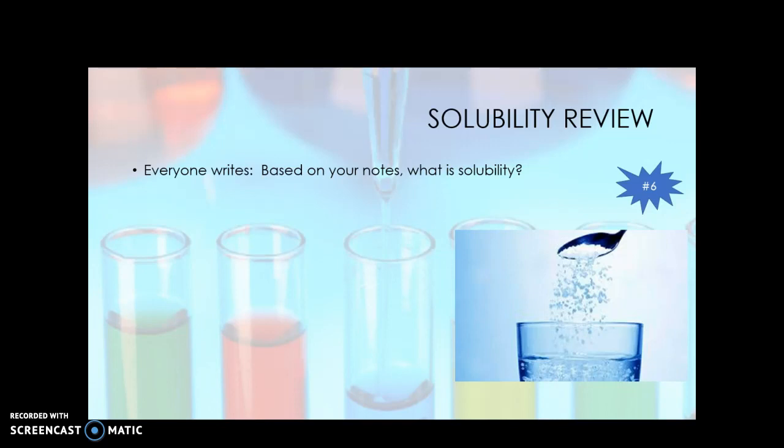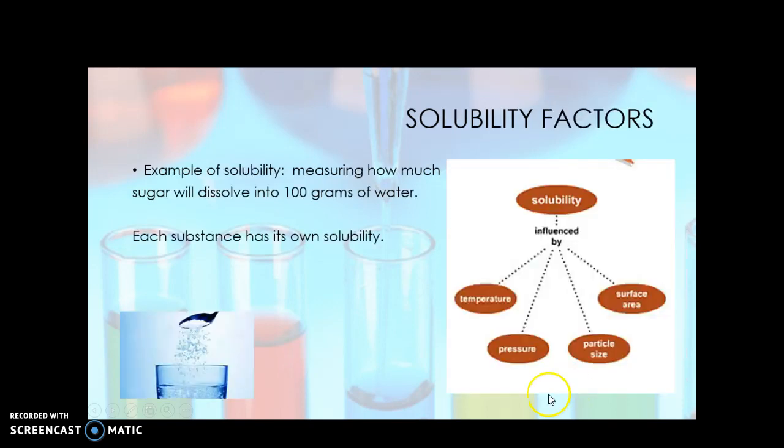So that's how much solute will be dissolved in a solvent. An example of that might be the salt or the sugar right here. That's our solute. And our solvent, that is the water down here. The medium, that's something that is being dissolved in. So there's quite a few factors that affect the solubility, and that is how much solute will be dissolved in the solvent. Every substance has its own solubility. One example of that is how much sugar would dissolve in 100 grams of water.